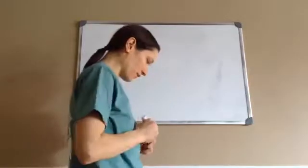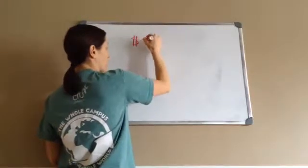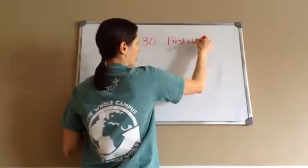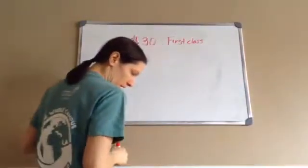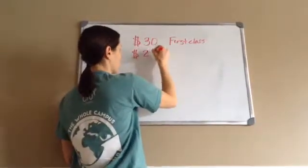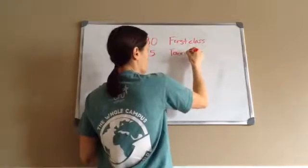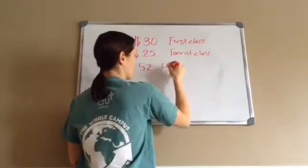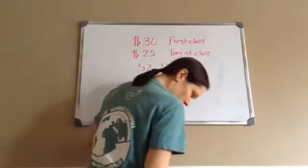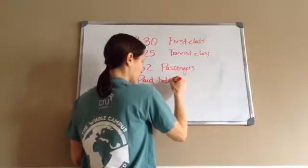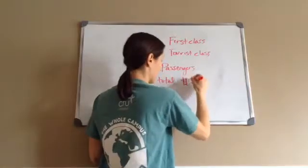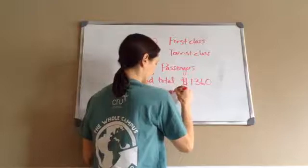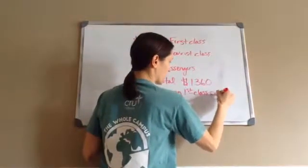Airline fares for flights from Tifton to Adele are $30 - I don't know who's riding for $30, but that's pretty incredible - for first class, meaning you have good seats, you get taken care of well. They're $30 for first class and $25 for tourist class. If a flight had 52 passengers, I'm just writing down key information, 52 passengers, and they paid a total of $1,360, how many first class passengers were on the trip?